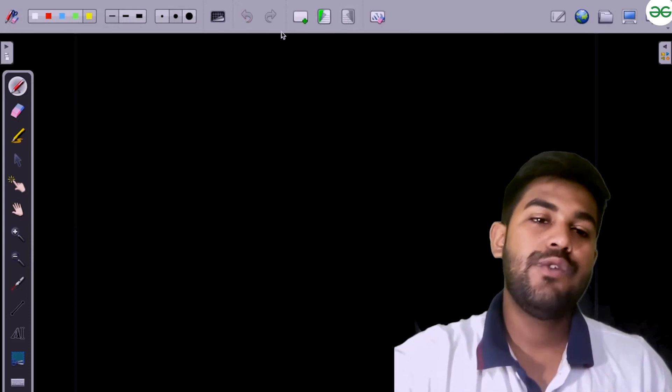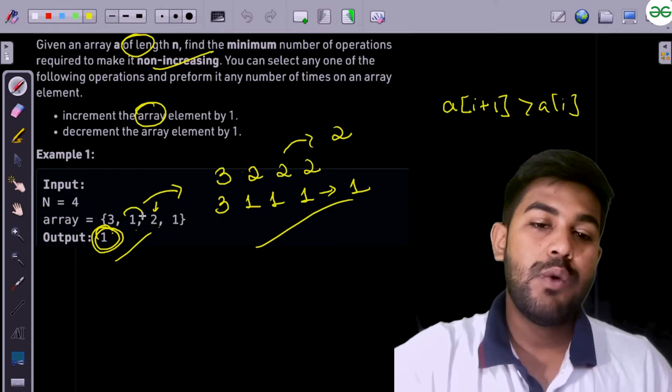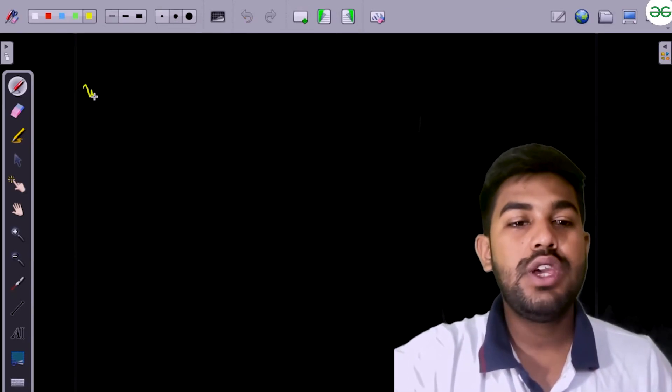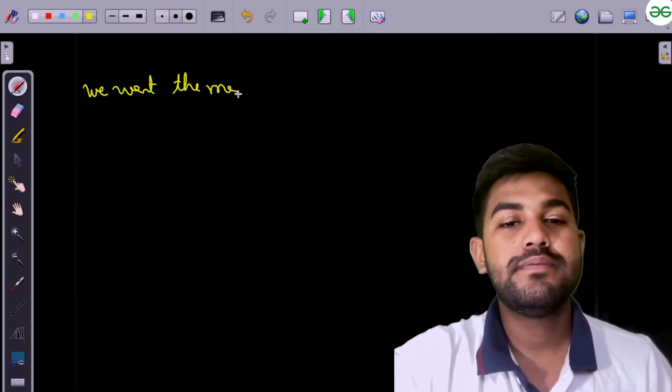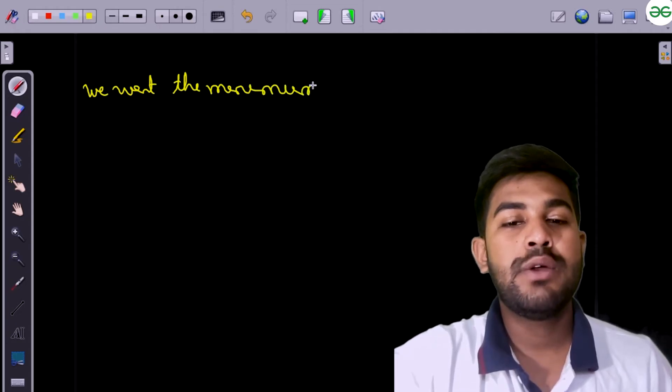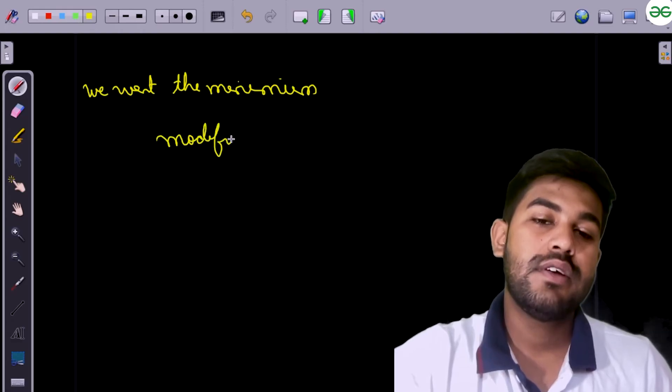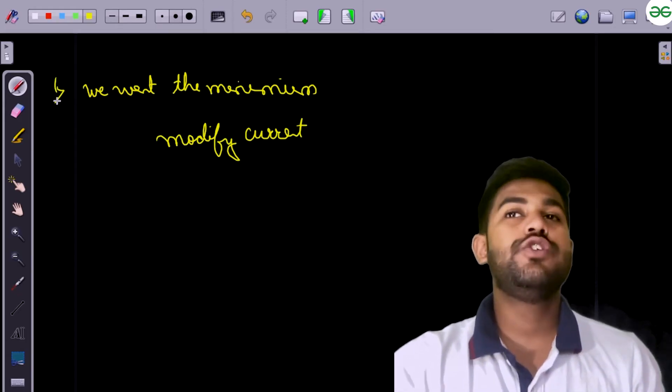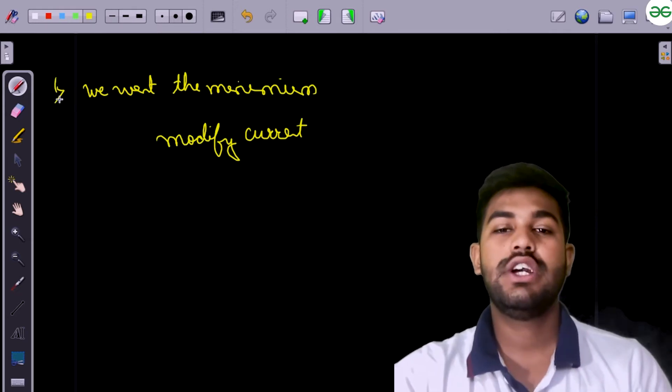So what we can do is, we can see that in the previous thing, we wanted the minimum element occurred till this point. So we want the minimum and then modify current element. This is what needs to be done. Now, how much we would modify and when would we know which one to be modified or not?